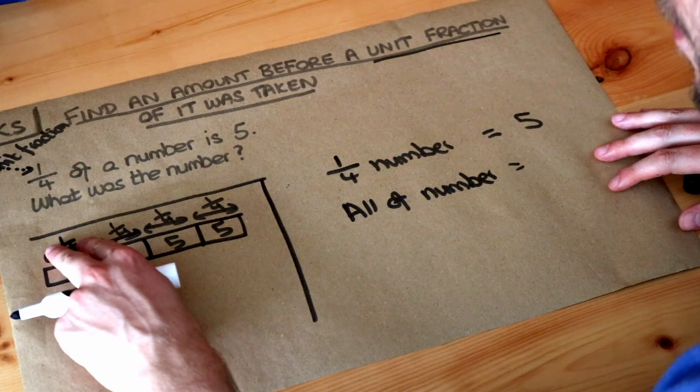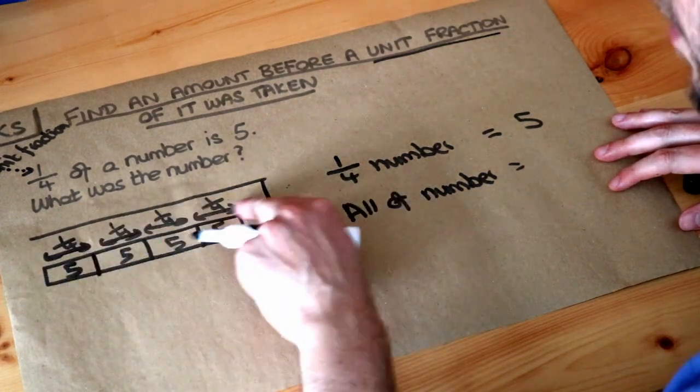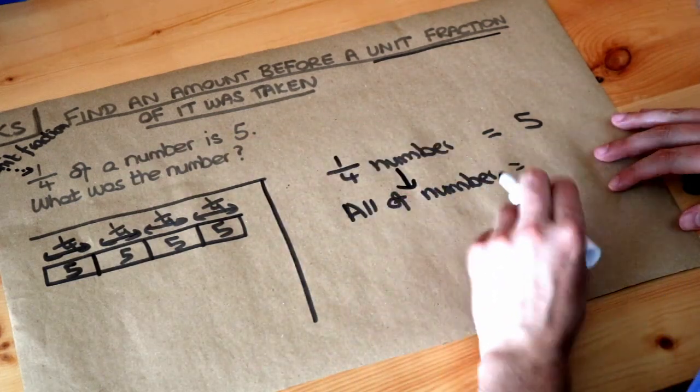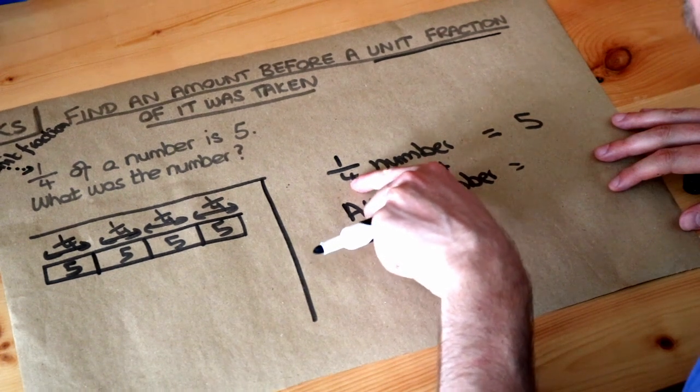Now if we've got a quarter of the number, we want to times that by 4 to get to all of the number. So to get from a quarter of the number to all of the number, you just times by 4, whatever that denominator, the bottom number, is there.